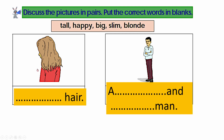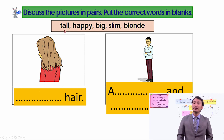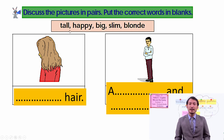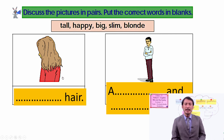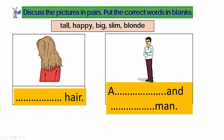Here you can see hair — what kind of hair do you think? You have the choices here: tall, happy, big, slim, blonde. Which kind of hair do you have? Is it tall hair? No. What kind of hair did we talk about? We talked about blonde hair. So it's blonde hair. You can write here — blonde. Did you guess so? Yes, you are good and smart.